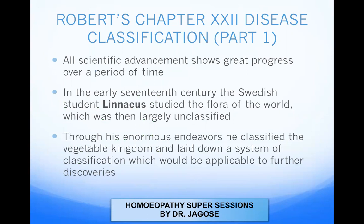All scientific advancement shows great progress over a period of time. In the early 17th century, the Swedish student Linnaeus studied the flora of the world, which was then largely unclassified. Through his enormous endeavors, he classified the vegetable kingdom and laid down a system of classification which would be applicable to further discoveries, laying the foundation stone for newer classifications to take place.